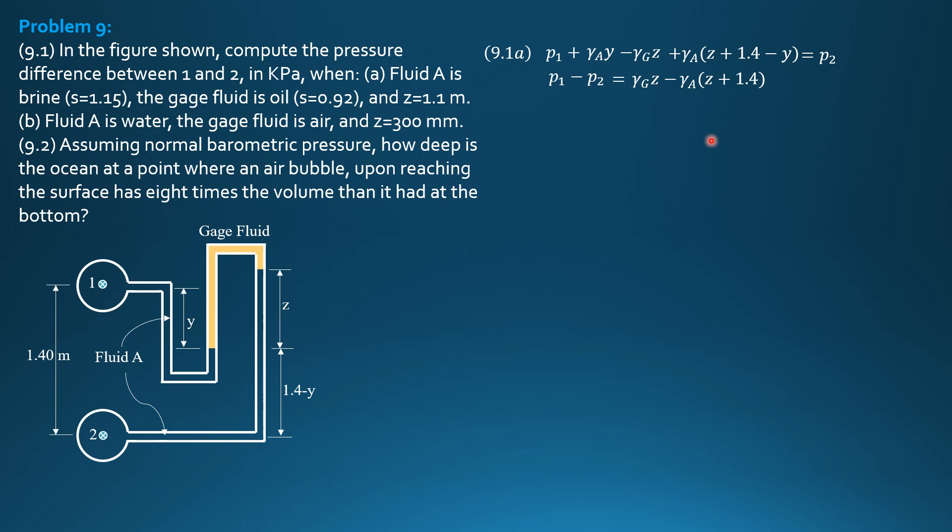So, substituting values P1 minus P2 equals specific weight of the gauge liquid is 0.92 times 9.81 times 1.1 minus 1.15 times 9.81 times quantity 1.1 plus 1.4.